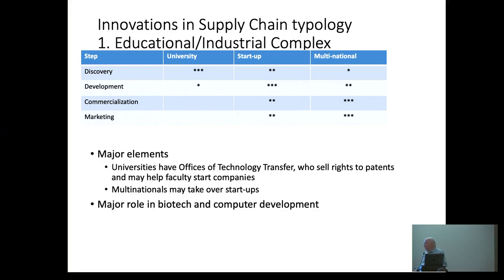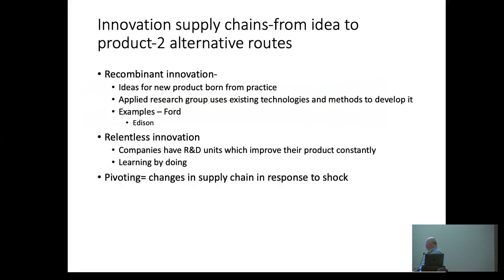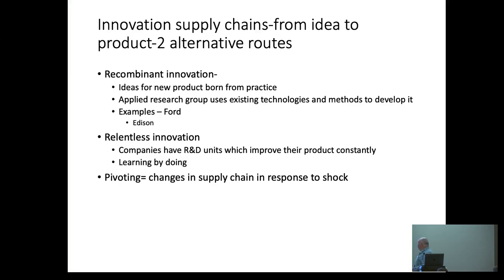This is especially important in biotech and computing. Generally speaking, there are three types of innovation supply chain. There is the educational-industrial complex. There is combinant innovation, where someone has an idea and uses all possible knowledge to make a new product — the example of Edison and Ford. And then there is relentless innovation, where a company has a product and constantly upgrades the supply chain to move forward.